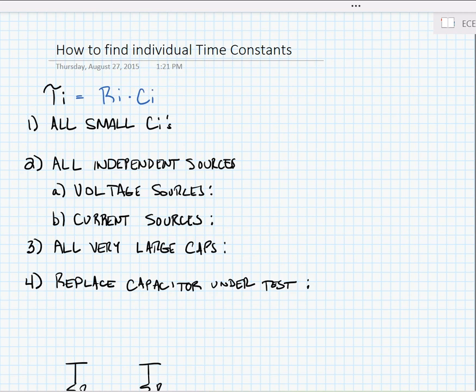And what we need to do is find R sub i, which is the equivalent resistance that the capacitor sees. This is a metric that tells us how fast or how long it takes to charge the individual capacitor through the resistor that it sees.